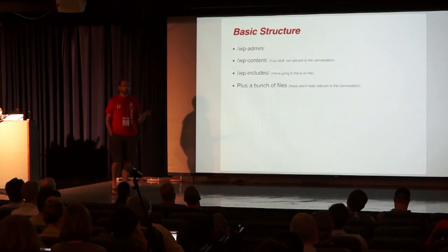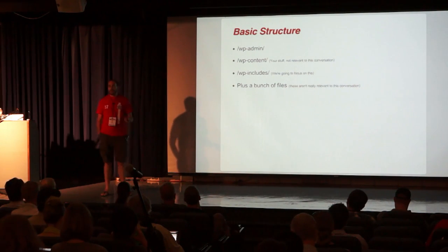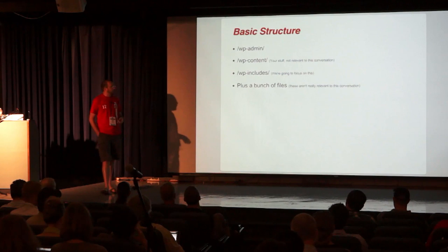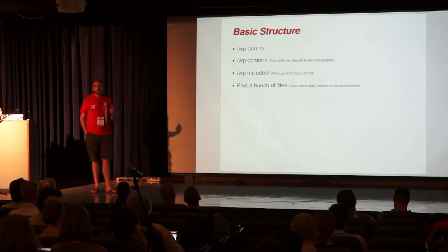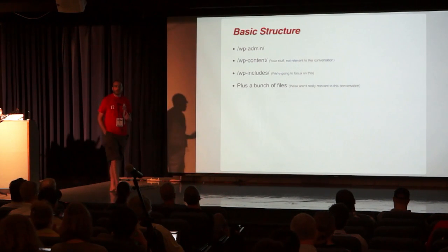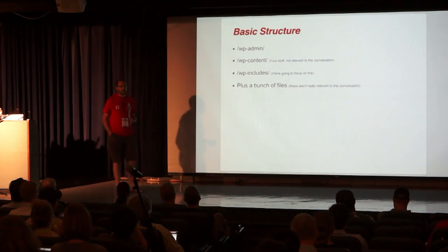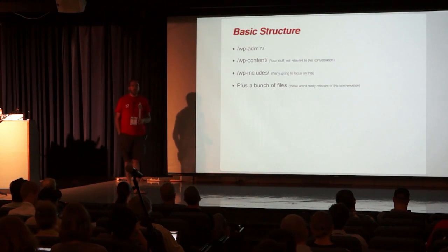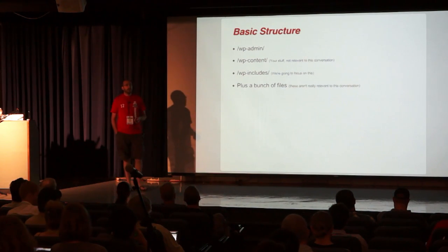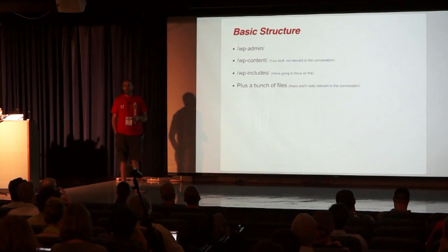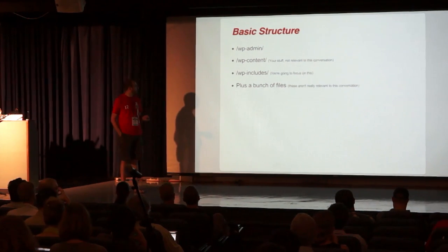So, basic structure: you've got wp-admin, which is your admin interface. You've got wp-content, which is your plugins, your themes, and so on — the stuff that you're adding to WordPress from outside of WordPress itself. And then you've got wp-includes, which is where the bulk of WordPress's functionality is found.